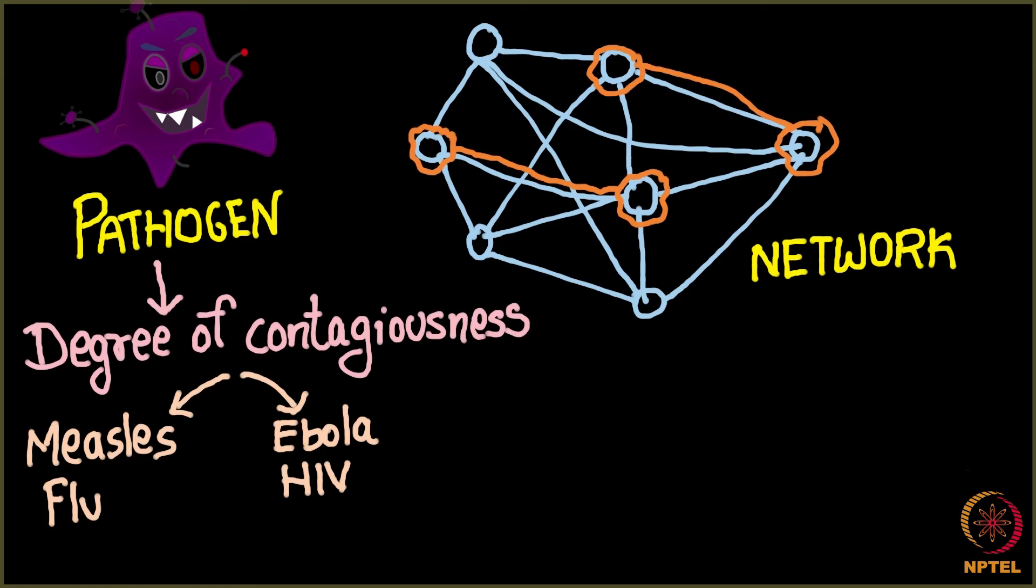So whether your network is dense or your network is sparse also depends upon what kind of a pathogen we are talking about. If this is a pathogen like flu, then the network is going to be quite dense. And if the pathogen is something like HIV, then this network is going to be very sparse.